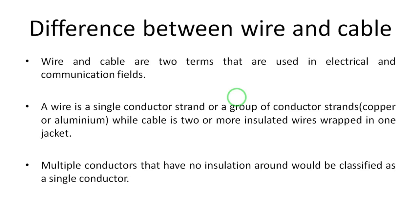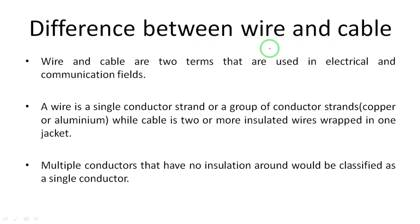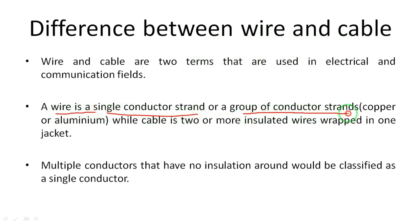In this video, we will learn about wires and cables. First, we need to understand the main difference between wire and cable. Both are main electrical terms and are similar, but there is a small difference. A wire is a single conductor strand or a group of conductor strands — materials are copper and aluminum. A single strand or multiple conductor strands can be called a wire.